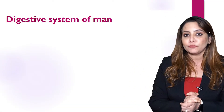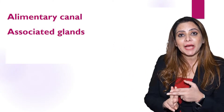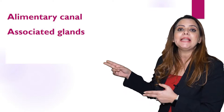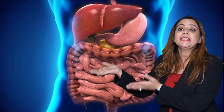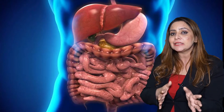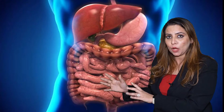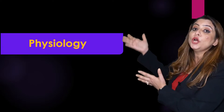The digestive system of man is divided into two main parts. The first part is the alimentary canal, and the second part consists of the associated glands - groups of cells that secrete enzymes which help in digestion, that is, breaking complex substances into simpler ones.